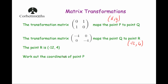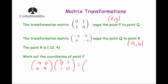First, I'll find the combined transformation matrix. Taking the second matrix (minus 4, 0, 0, minus 4) and multiplying by the first (0, 1, 1, 0): first row times first column — minus 4 times 0 plus 0 times 1 is 0. First row times second column — minus 4 times 1 plus 0 times 0 is minus 4. Second row times first column — 0 times 0 plus minus 4 times 1 is minus 4. Second row times second column — 0 times 1 plus minus 4 times 0 is 0. So the combined matrix is 0, minus 4, minus 4, 0.